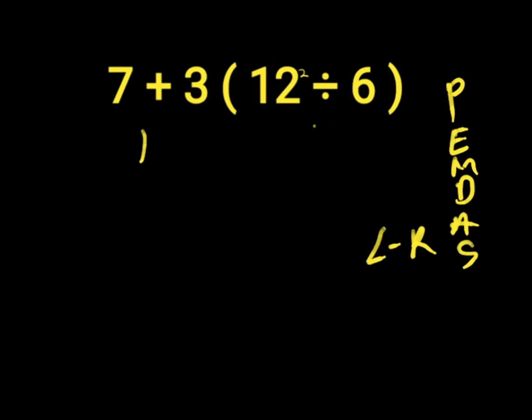First of all, we solve our parentheses. In our parentheses we have an exponent which is 12 to the power of 2, so we solve our exponent first. 12 to the power of 2 is 12 times 12. 12 times 12 will give us 144.